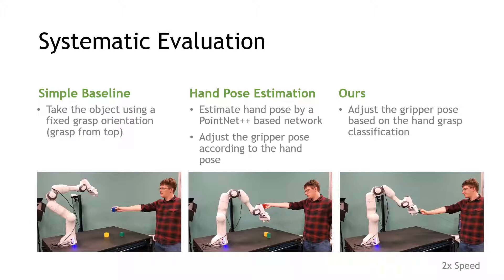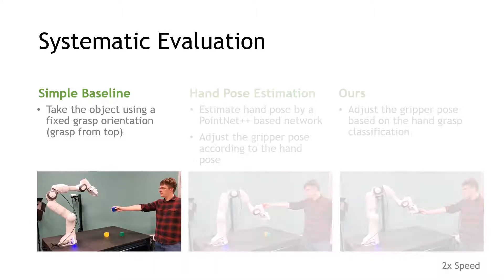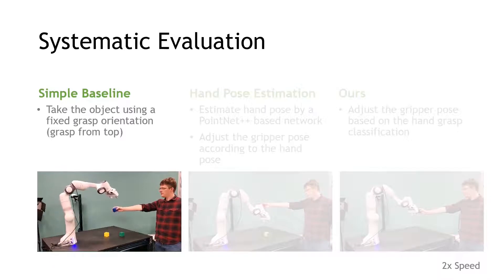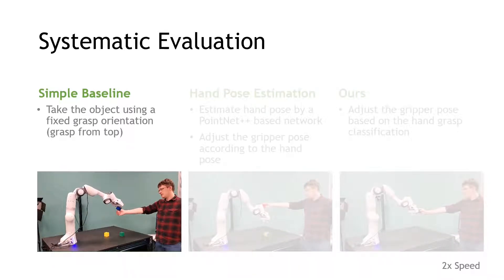However, each one changes the way we decide which grasp to take. In the simplest baseline, we take the object using a fixed grasp orientation, always grasping from the top regardless of how the human is holding it.